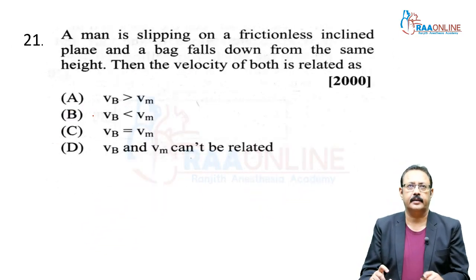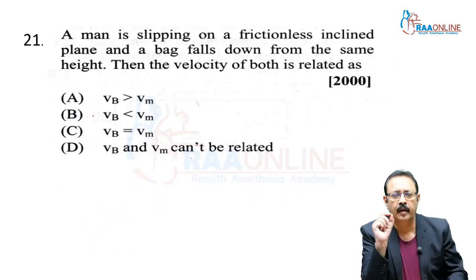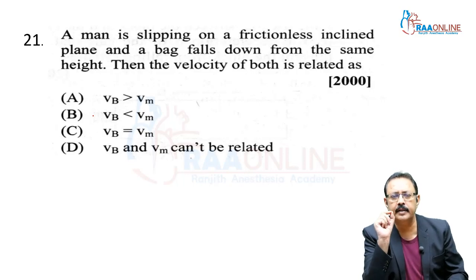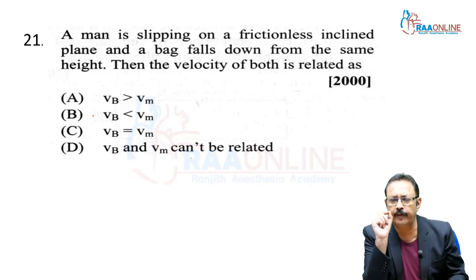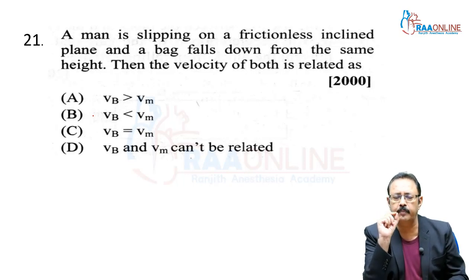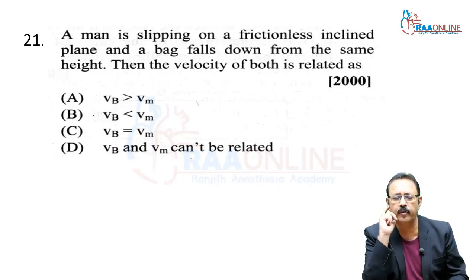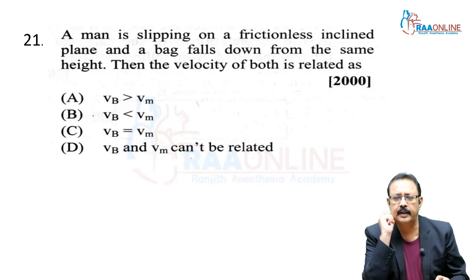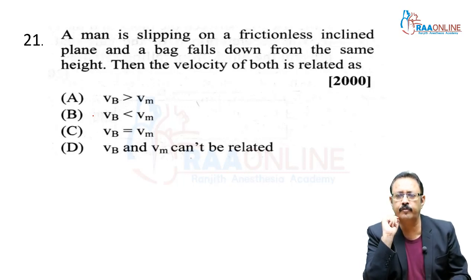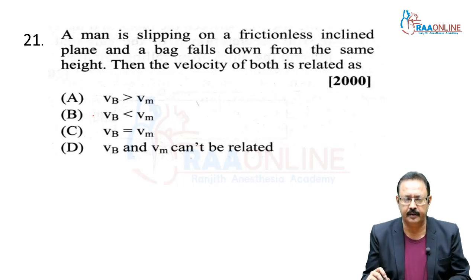Next: A man is slipping on a frictionless inclined plane and a bag falls down from the same height. Then the velocity of both is related as?